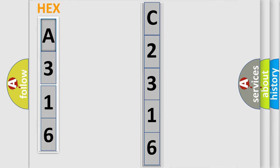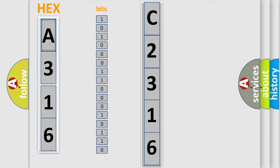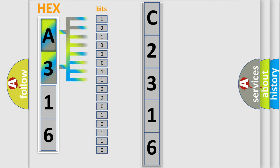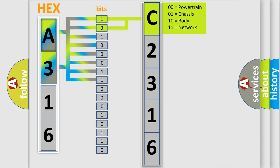The error code is split into two bytes consisting of 16 bits. One bit is the basic unit that each computer works with. The bit has two logical states: zero, low level, and one, high level. By combining the first two bits, the basic character of the error code is expressed.